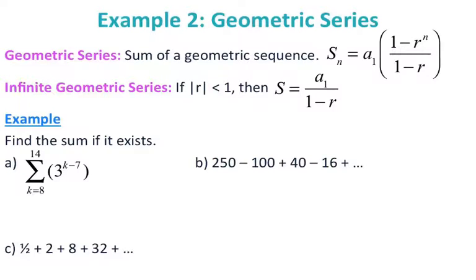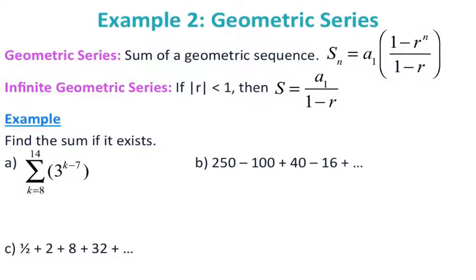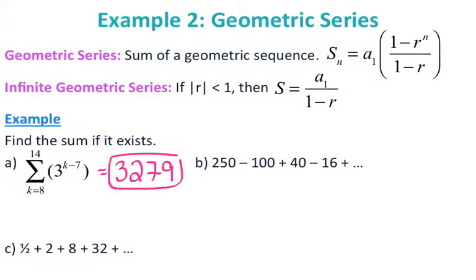For a geometric series — adding all the terms of a sequence together — there is a formula, but I don't use it very often. Instead, especially with summation notation, I just plug it right into the calculator using the shortcut alpha window, option number 2. For letter A, I have k equals 8 up to 14, and 3 to the k minus 7 inside the parentheses, which gives 3,279.